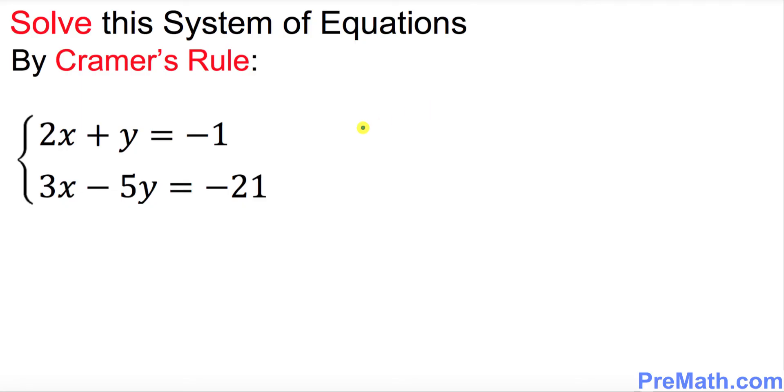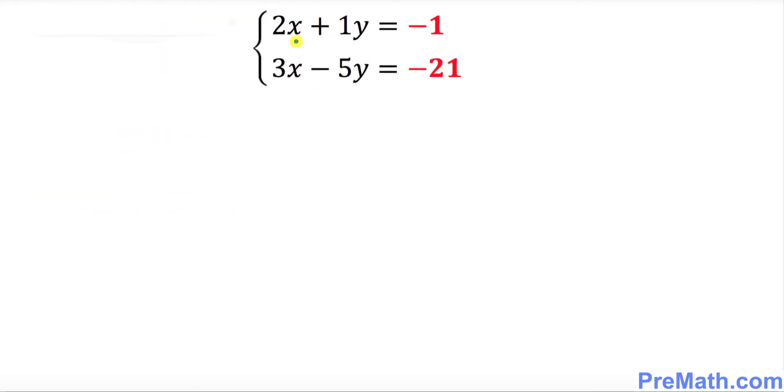Before we go any further, I want you to look at these two equations and make sure that a couple of things are satisfied. The first thing we keep in mind is that all these x's are nicely lined up, y's are nicely lined up as well, and the numbers on the right hand side. I put them in red color for a purpose, and I'll tell you later on. Make sure if there's any coefficient missing put it down - like y was there so I put down one times y.